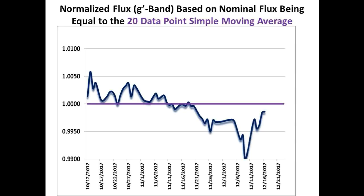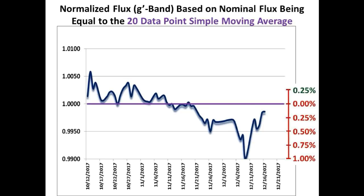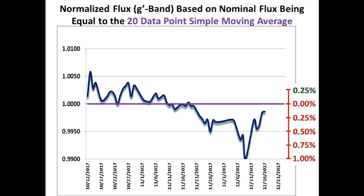From our last update on December 16th, this was the normalized G-band light curve of Tabby Star using the 20 data point simple moving average as the nominal flux level, and it showed that we were down approximately 0.15% from the nominal flux level. Bruce Gary was unable to make measurements on December 17th, 18th, 19th, and the 22nd due to bad observation weather, so we will show you what we have.